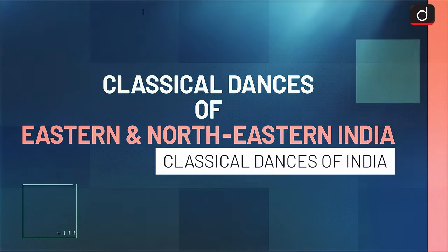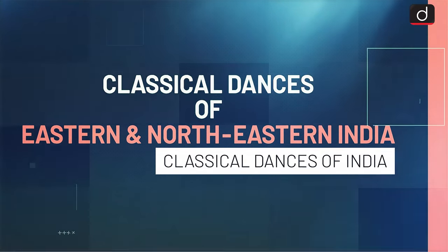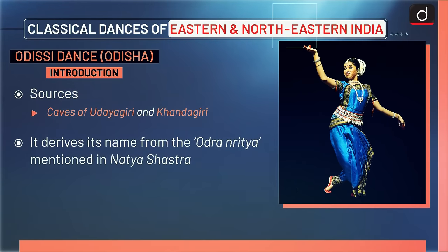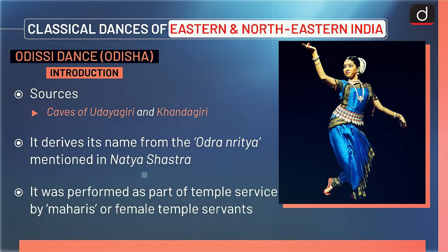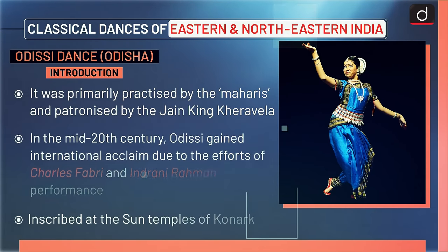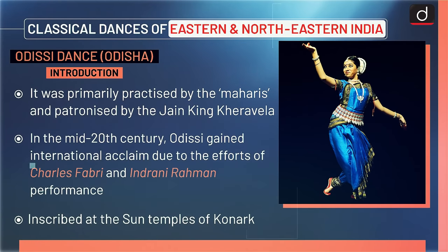Now let's see the classical dances of eastern and northeastern India. First is Odissi dance from Odisha. The sources of Odissi dance are the caves of Udaygiri and Khandagiri. It derives its name from the Odra Nritya mentioned in Natya Shastra. It was performed as part of temple service by Maharis, or female temple servants, and was patronized by the Jain King Kharavela. In the mid-20th century, Odissi gained international acclaim due to the efforts of Charles Fabri and Indrani Rahman. It is inscribed at the Sun Temple of Konark.